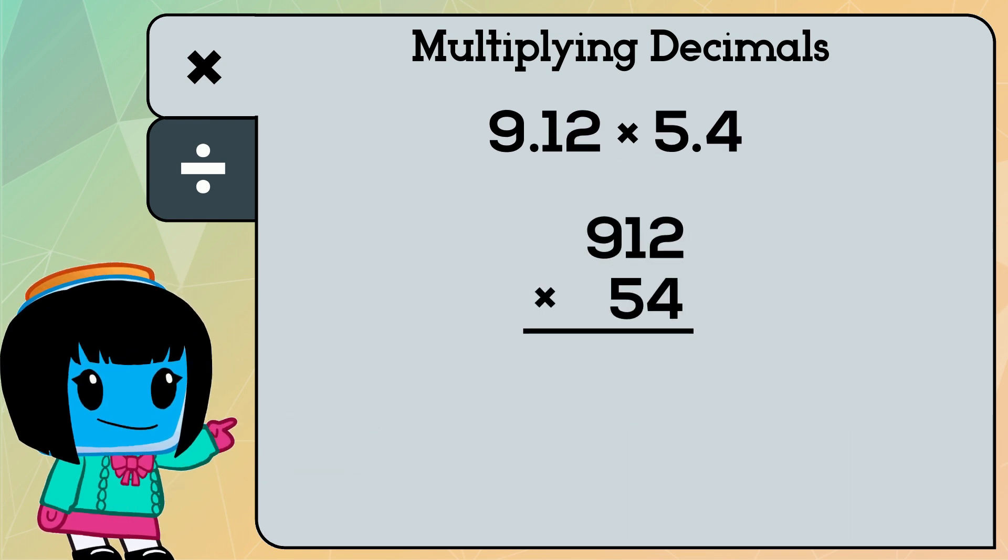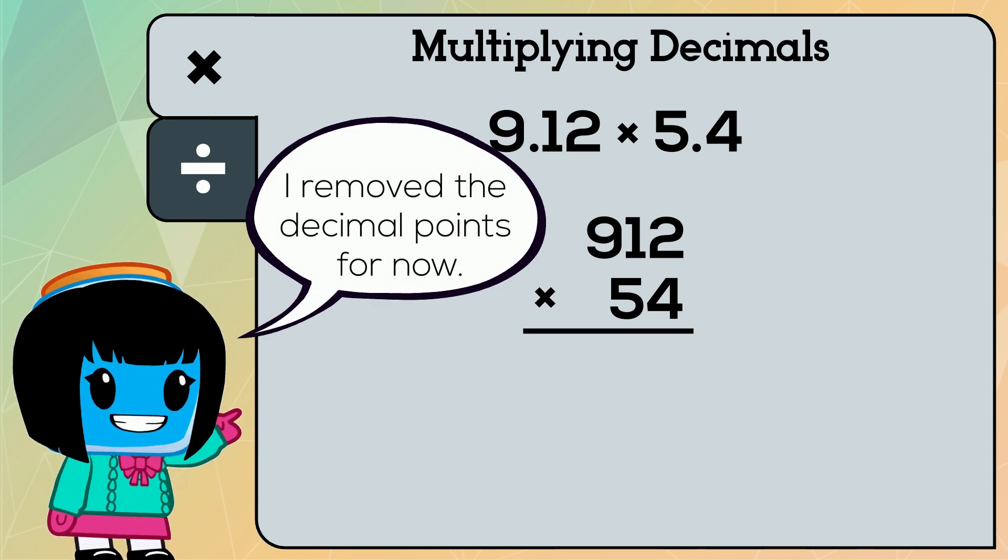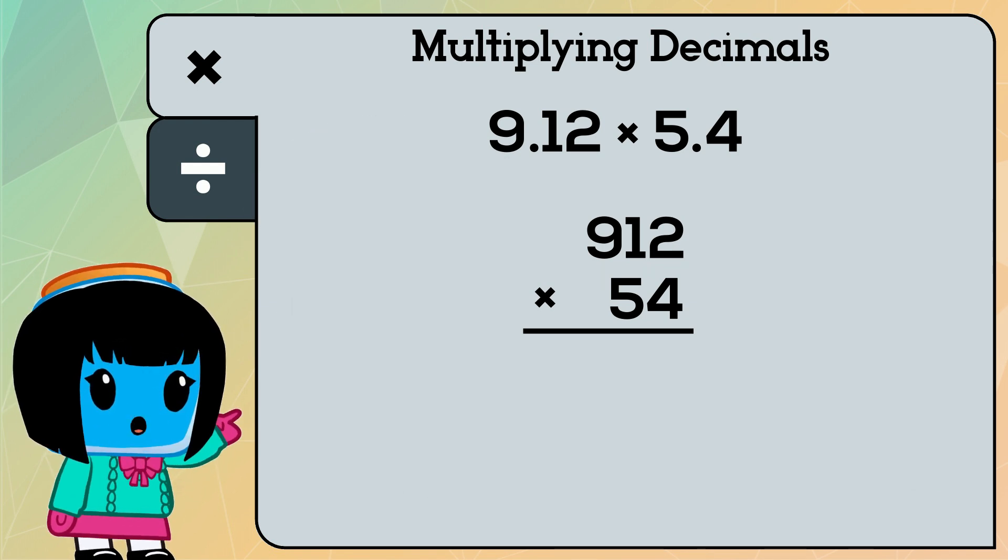Now we multiply according to the standard algorithm. Notice I don't have any decimal points. We need to multiply each digit in the first factor by 4, starting in the right-most column.